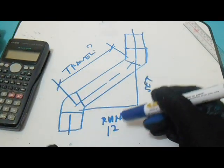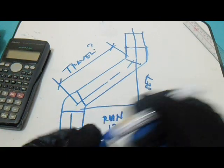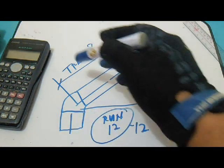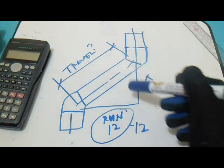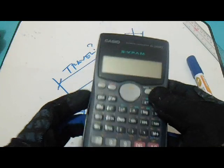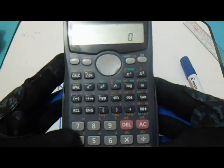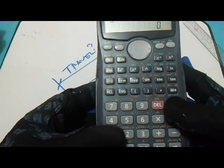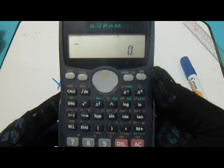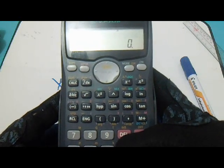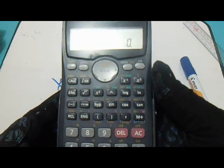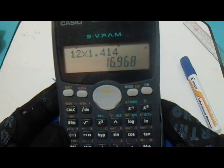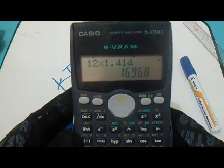Let's try to compute it with known side of run. So we have a run of 12 and we will compute this travel for the 45 degrees. I will multiply 12 by 1.414. Okay, that is the answer for our travel: 16.9.